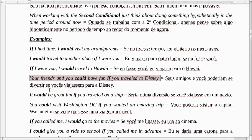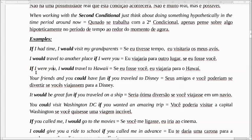Seus amigos e você poderiam se divertir se vocês viajassem para a Disney. A única diferença da primeira para a segunda condicional: a primeira era uma coisa real, que realmente aconteceria — era algo certo. Aqui é uma coisa provável, mas não é certeza. It would be great fun if you traveled on a ship. Seria uma ótima diversão se você viajasse em um navio.